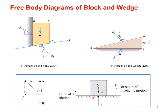Consider a block resting on a horizontal surface. You have the self-weight of the block, the applied force P, the normal reaction N at the contact surface, and the frictional force F acting opposite to the direction of motion. The resultant R of the frictional force F and the normal reaction N makes an angle phi with the normal reaction. This phi is called the angle of friction.